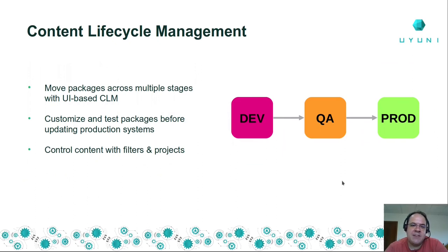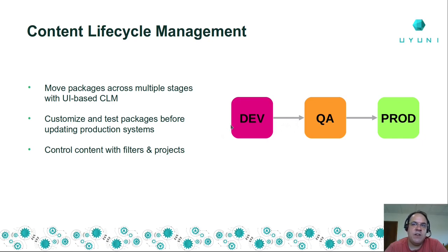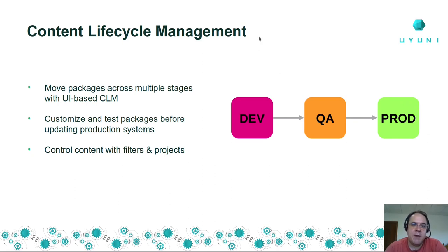Joe really likes content lifecycle management: he can create projects and filters and is in full control of what software each client has. He can define the three typical environments — development, testing, and production — and filter software in and out, combining different channels and sources. Once he has tested in his development clients, he promotes the software channel to QA. After careful testing, he can quarterly promote the software to production on all systems at once, just by subscribing to channels automatically created by the content lifecycle management feature.